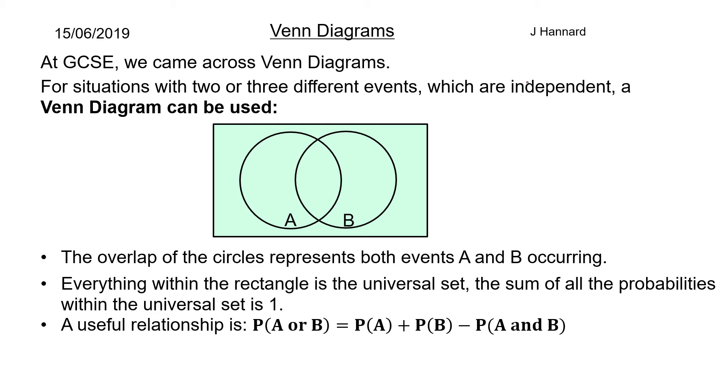A useful relationship is the probability of A or B is equal to P of A plus P of B minus P of A and B.